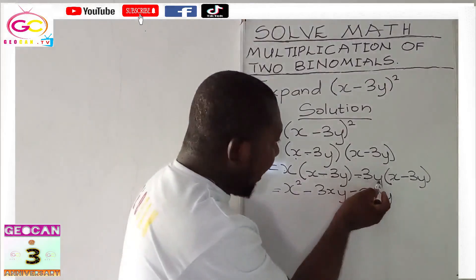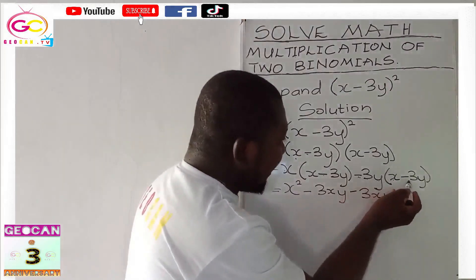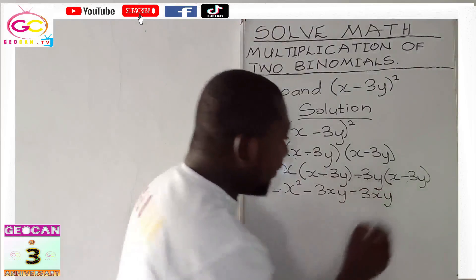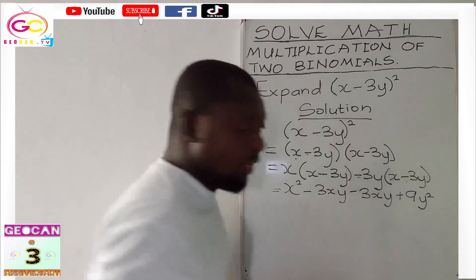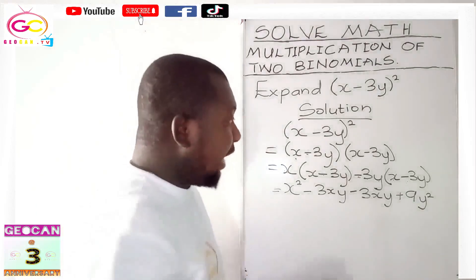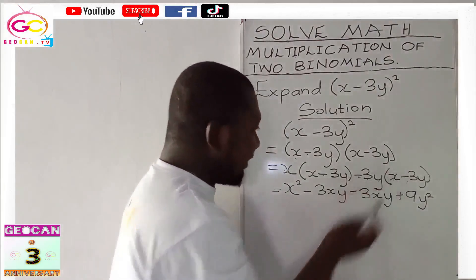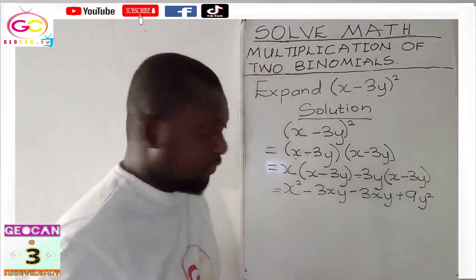Now, we have negative 3y times negative 3y. It will give us positive 9y squared. Now, rules of algebra. And take note. Any time a negative multiplies a negative, the answer becomes positive.